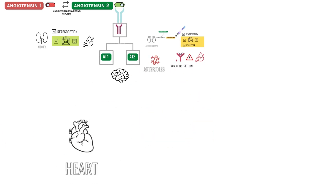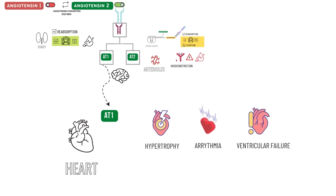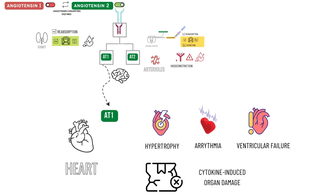Next, we will have a look at how angiotensin affects the heart. Angiotensin 1 receptors are prominent in the heart and present a binding site for angiotensin. Angiotensin 2 binding to the angiotensin 1 receptors in the heart can cause hypertrophy, arrhythmia, and failure of ventricular function, along with increased membrane permeability and epithelial cell death. Excessive angiotensin 2 can also cause significant inflammatory alterations like cytokine-induced organ damage.